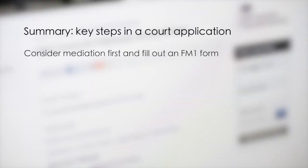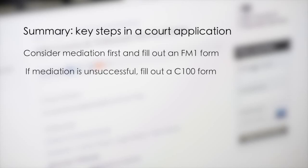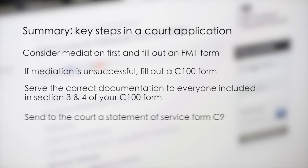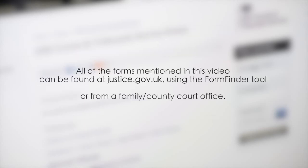Summary — key steps in a court application: Consider mediation first. Fill out an FM1 form. If mediation is unsuccessful, fill out a C100 form. Serve the correct documentation to everyone included in Section 3 and 4 of your C100 form. Send to the court a Statement of Service form C9. All of the forms mentioned in this video can be found at justice.gov.uk using the form finder tool, or from a family or county court office.